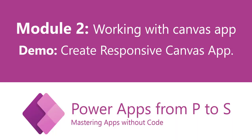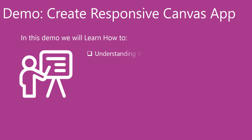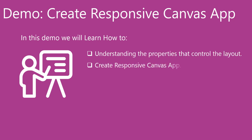Canvas app is not responsive by design, and we have to choose a screen type when creating a canvas app. In this demo, we will learn how to make a responsive canvas app. We will follow these outlines: understanding the properties that control the layout, creating a responsive canvas app by editing the app properties, and controlling alignment and responsive font size.